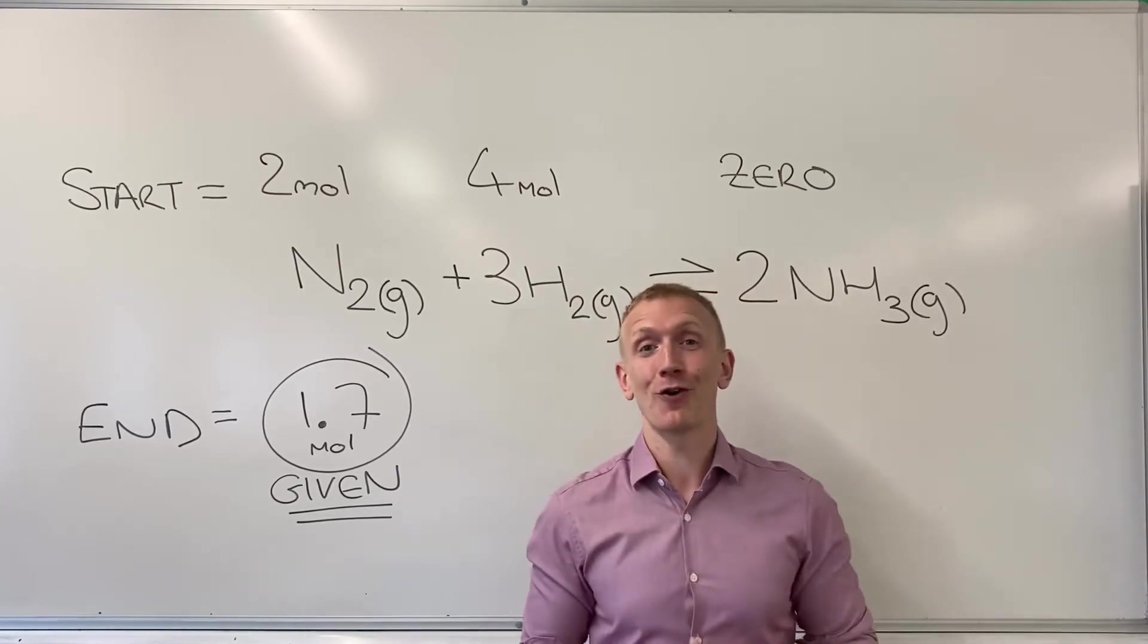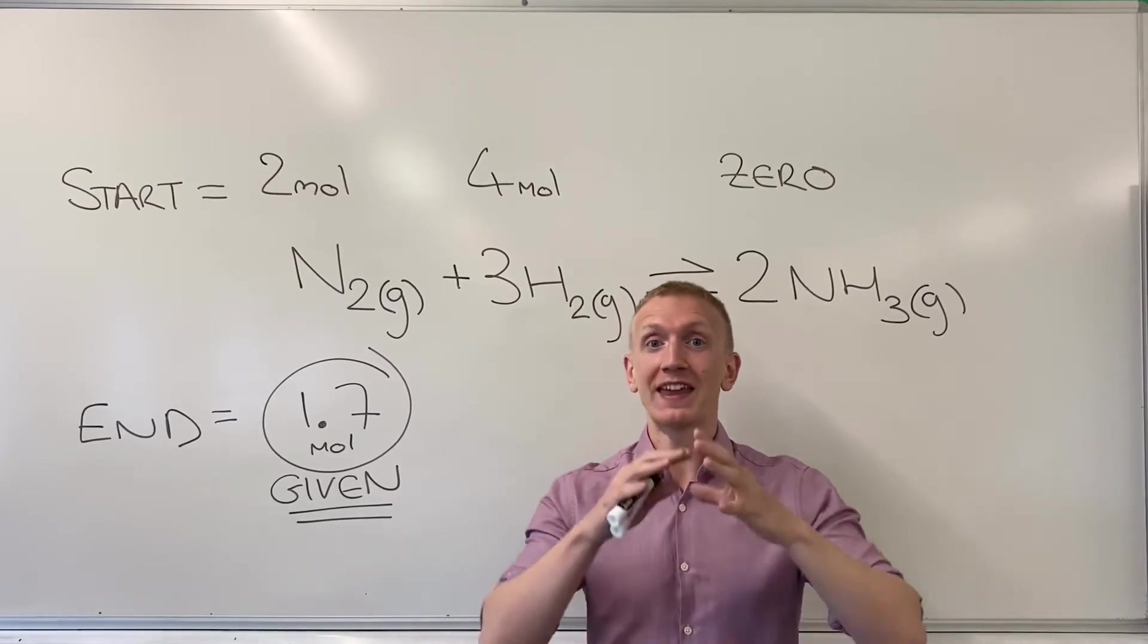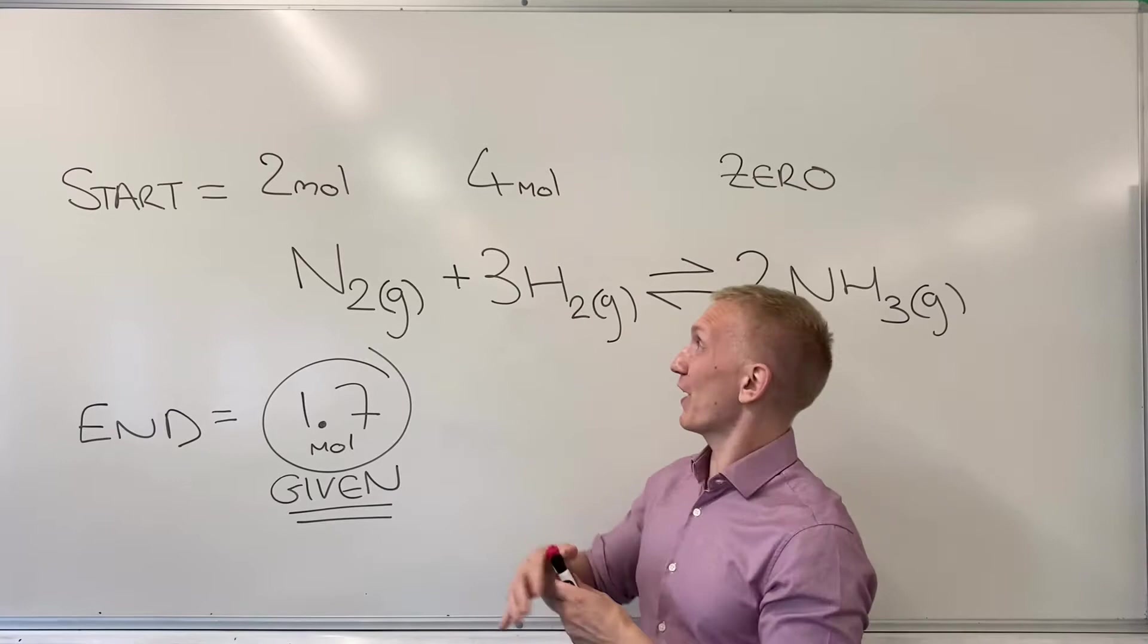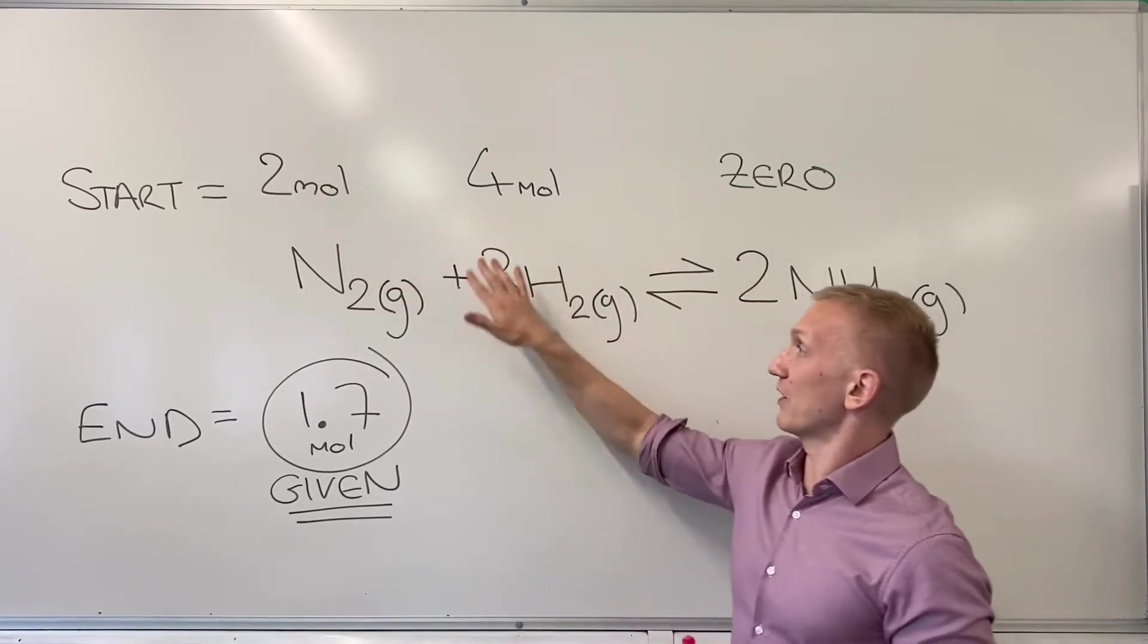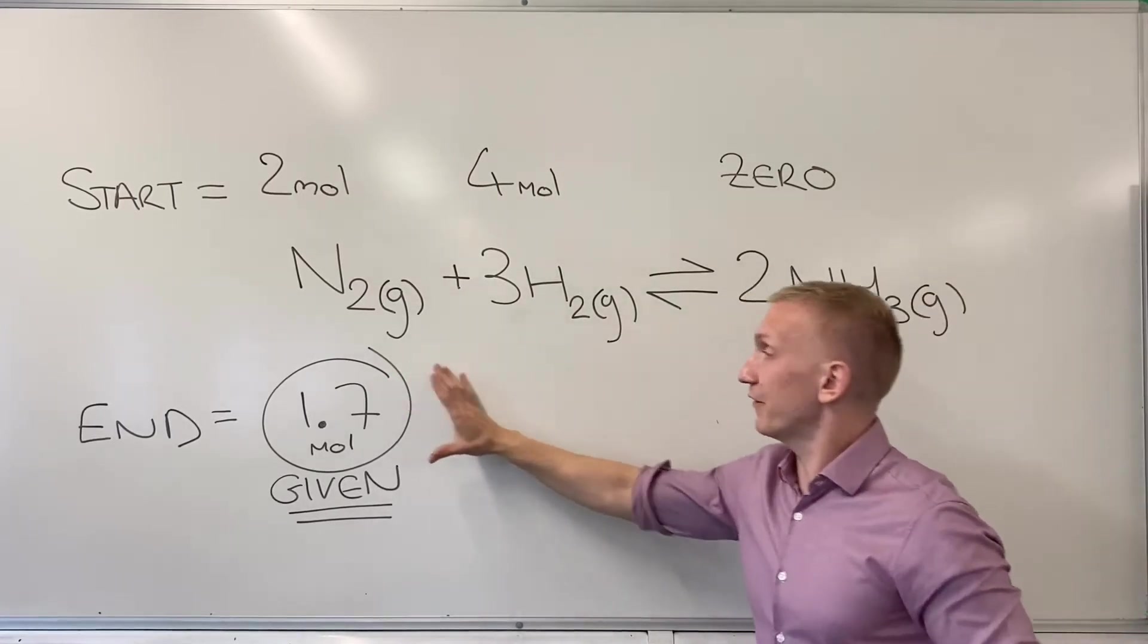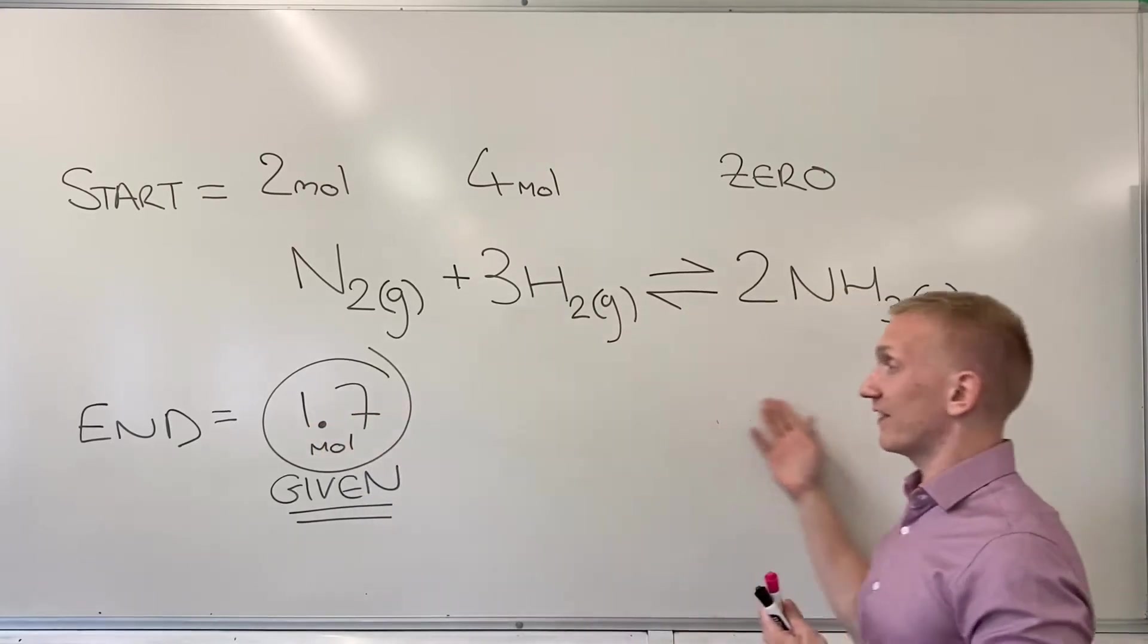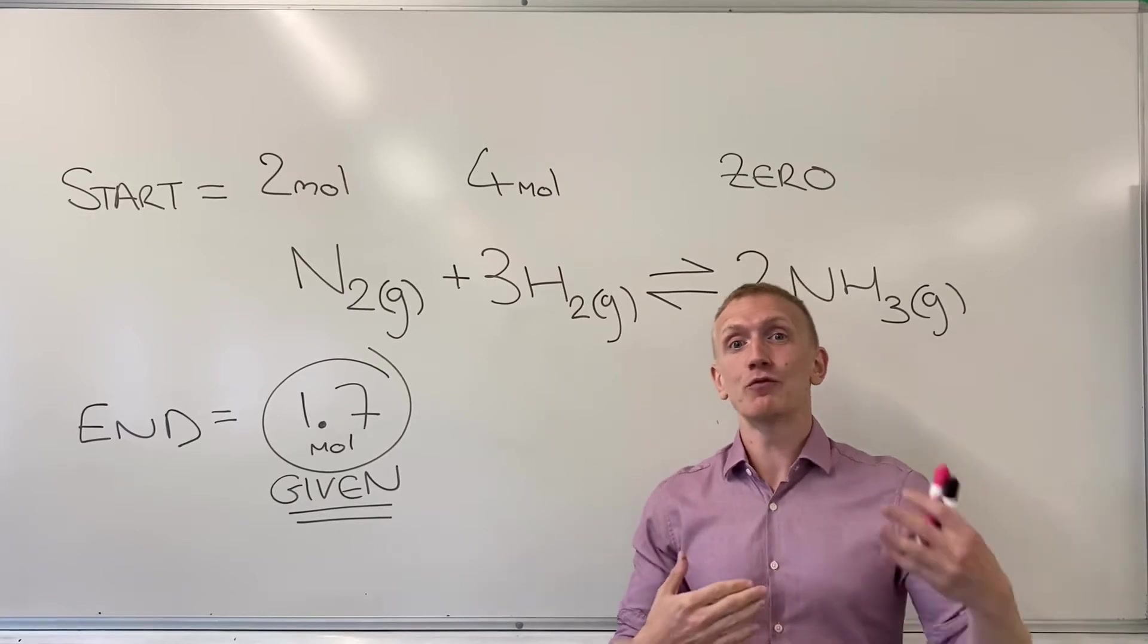Now in order to calculate that Kc value for that equilibrium you need to know what the mole values are whilst the system is at equilibrium. And your starting mole values aren't going to be the same as that. Because you've got starting mole values for your reactants that you then allow to reach equilibrium giving you a different set of mole values for everything at the end once the equilibrium has been established. And if all of these stay constant then that tells you your equilibrium has been established because the rate of the forwards reaction must be equal to the rate of the backwards reaction.